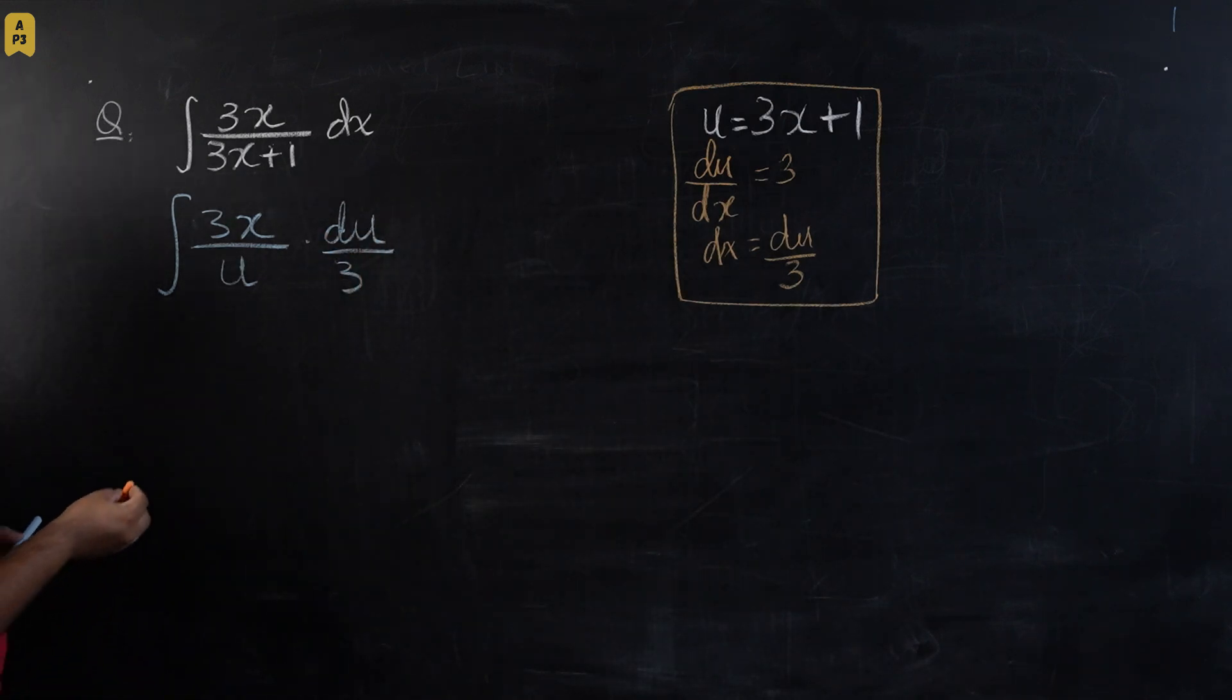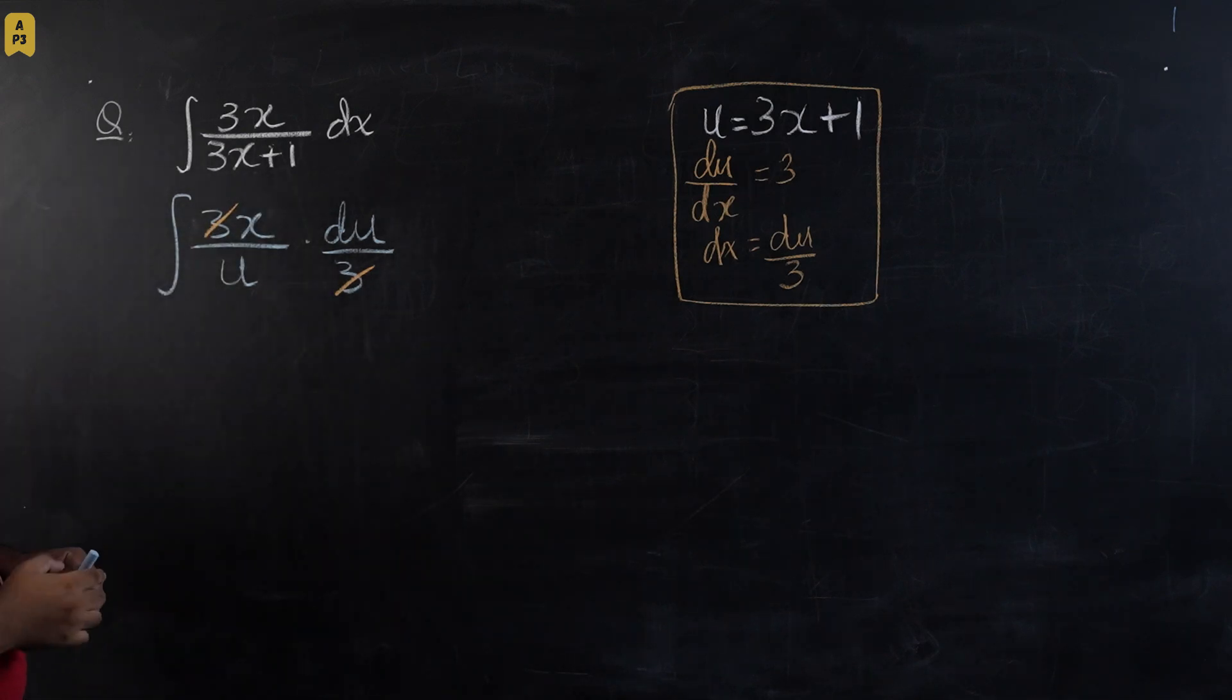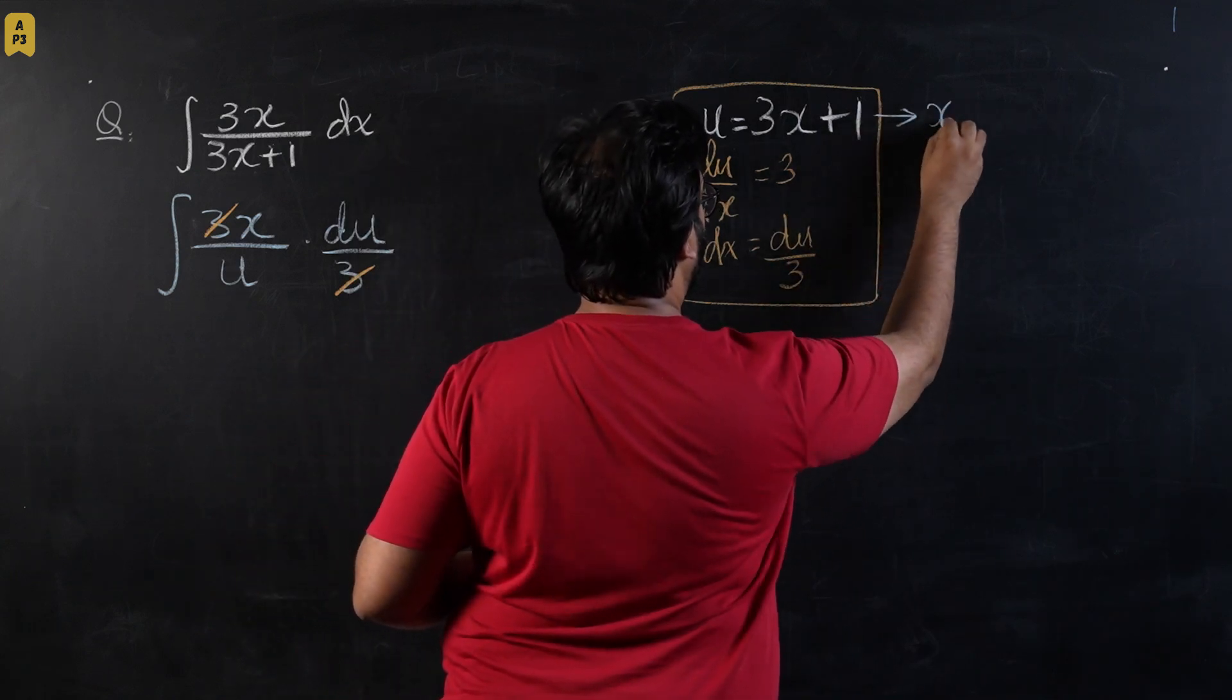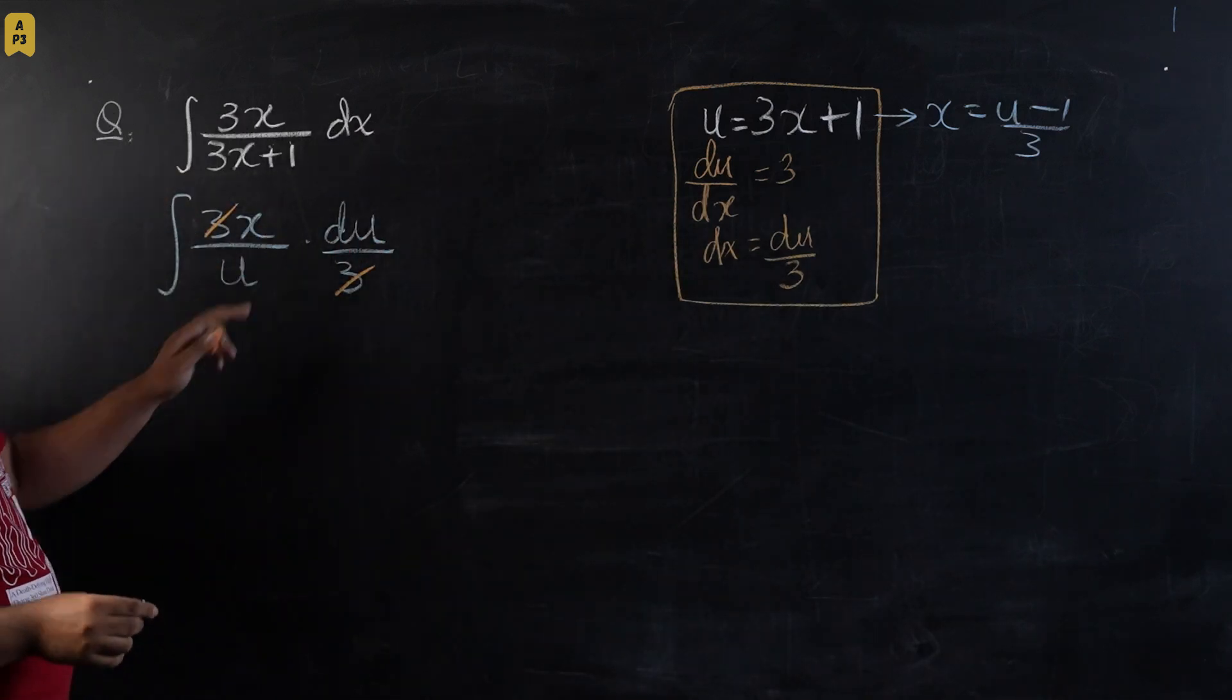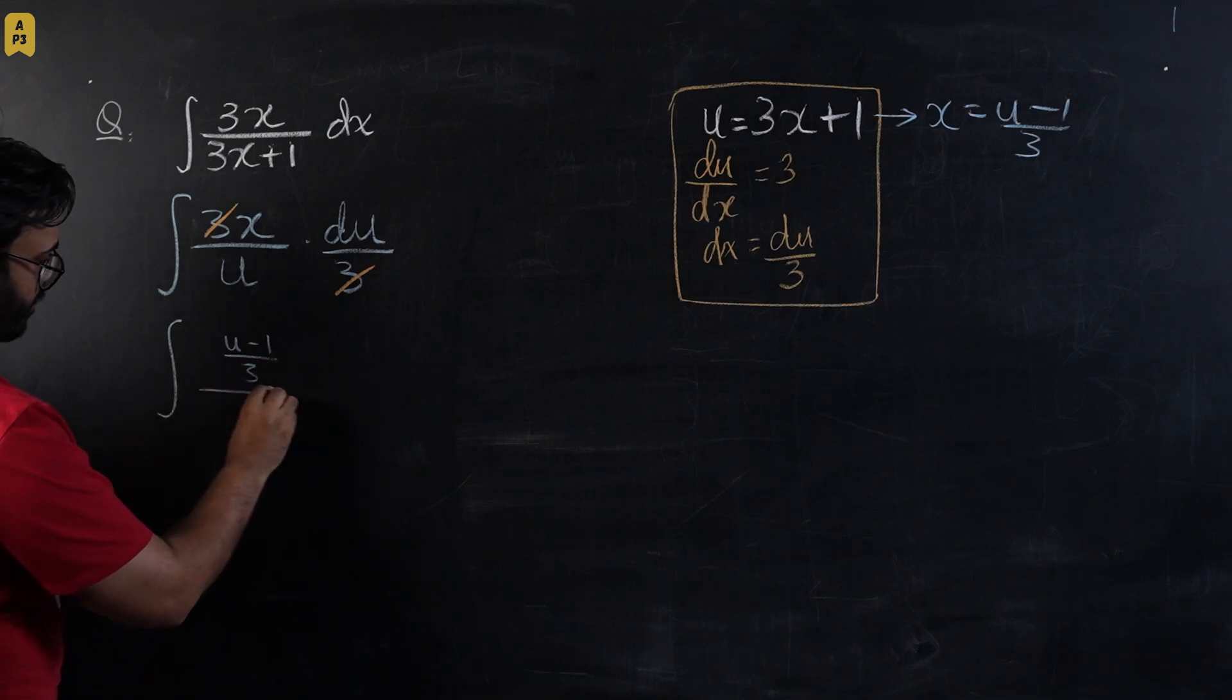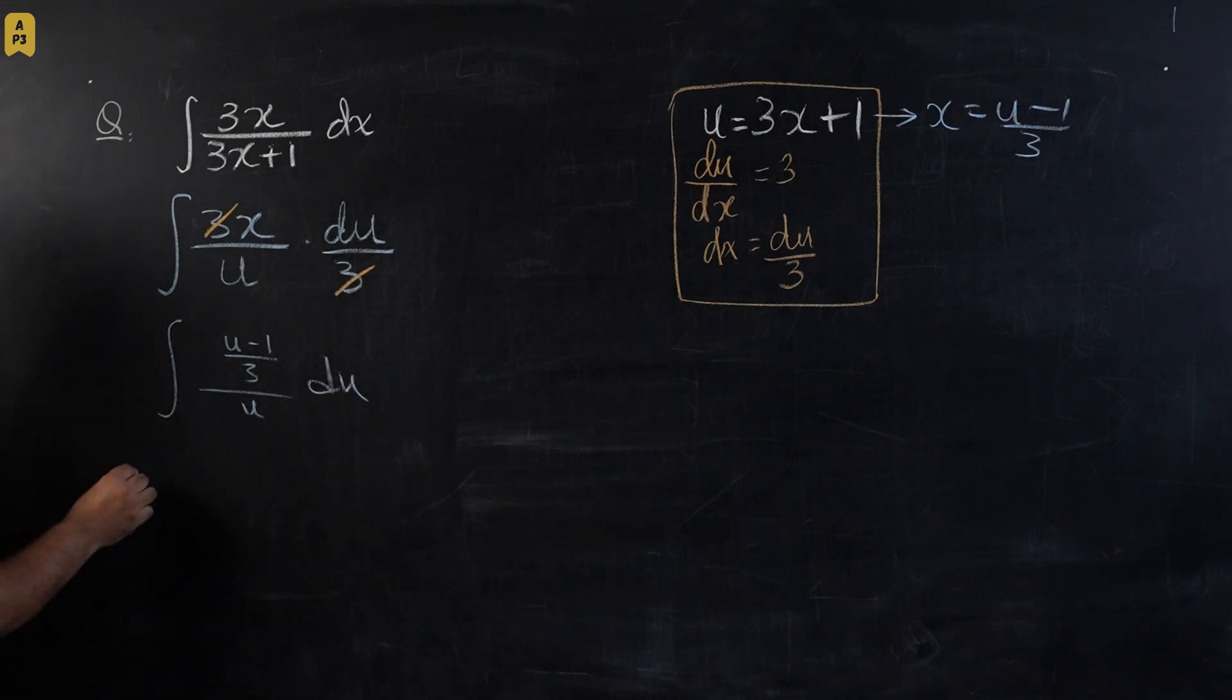So once we have this value, I know this 3 goes away. And for this x, we're going to make x the subject again. So x would be equal to u minus 1 over 3. So this x will be substituted again, this would be u minus 1 over 3 upon u du. So let's bring this 1 over 3 outside.